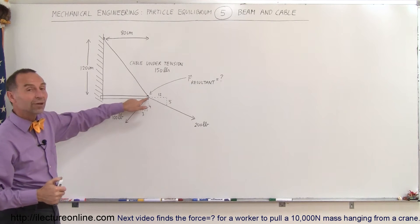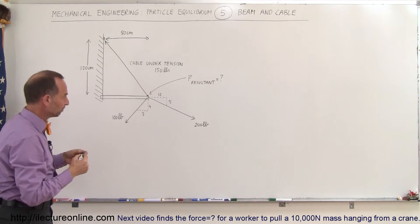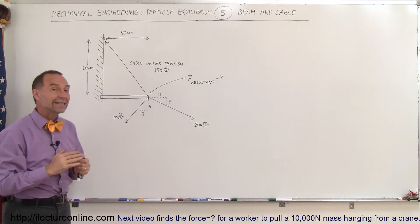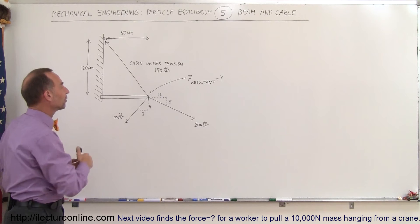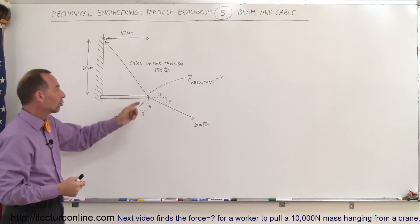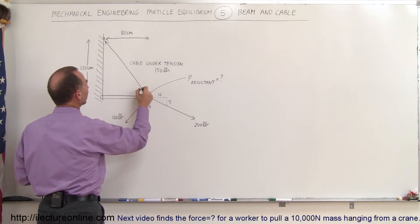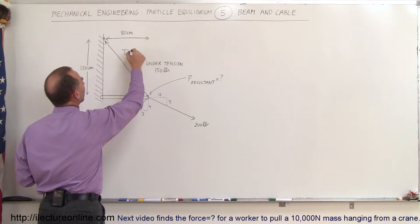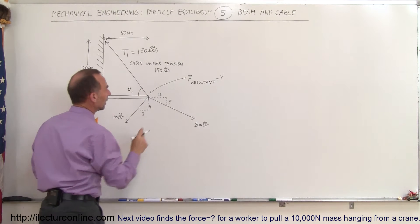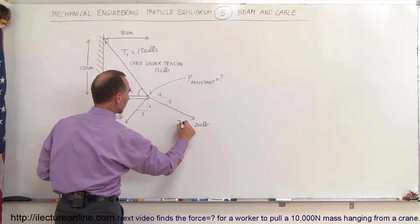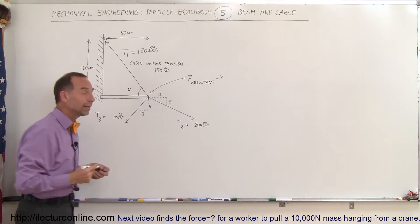Notice that relative to this point at the edge of the beam, the cable is pulling on the beam in this direction. We need to find the X and Y components of each force, which requires finding the angles of the various forces relative to the horizontal and vertical. Let's label them: tension 1 equals 150 pounds with angle theta 1, tension 2 and tension 3. It doesn't matter which order you label them — you still need the angles.